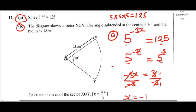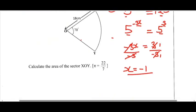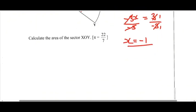Let us now go to question B. The diagram shows a sector XOY. The angle subtended at the center is 70 degrees and the radius is 18 centimeters. Calculate the area of the sector XOY. To find the area of this sector, the first thing you are going to write the formula. The formula is area of the sector is given by theta over 360 degrees times pi r squared. So this is our formula.